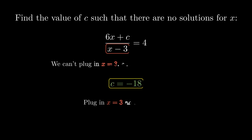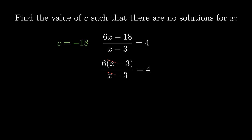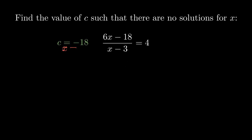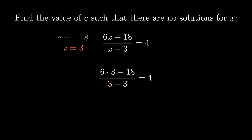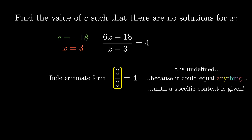To get an intuition for why this c value causes problems, notice two things. First, if you plug in our c value and factor out a 6 from the top, you can cancel like factors to obtain a false equation. Any other c value would mean that the factors won't cancel. The second way to intuit this is to plug in x equals 3 and notice that not only are we dividing by 0, but the numerator is also 0. 0 divided by 0 is special, being something called an indeterminate form. It means that it is not only undefined, but there exists a context for which it could equal anything. Since we don't have any further context, this is not a solution, as 0 divided by 0 is undefined.